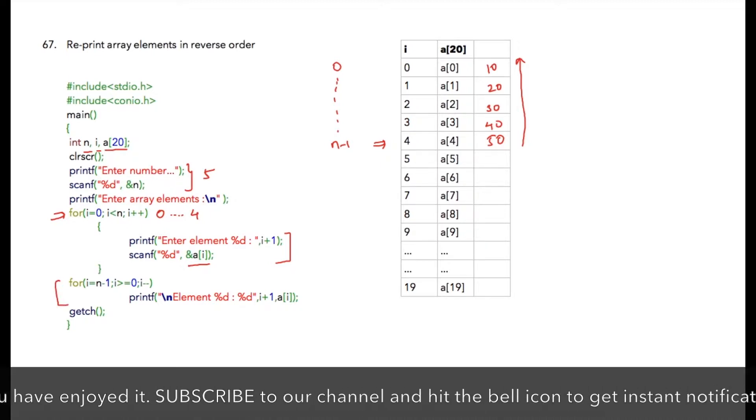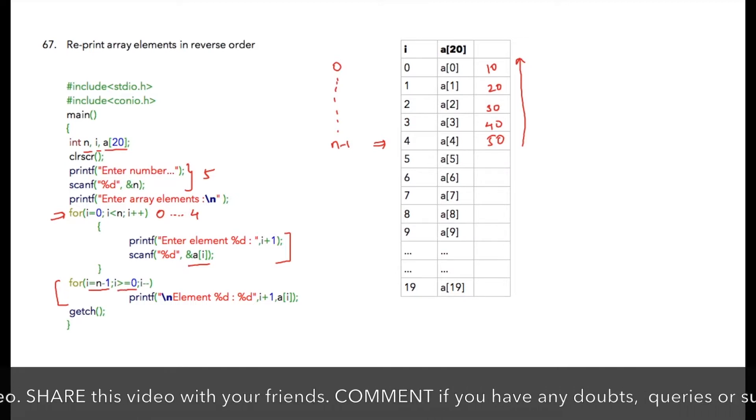This is our second for loop to print array elements in reverse order. I am starting i from n minus one and the condition will be i greater than equal to zero and i will be decremented on each iteration. Inside of printf statement I am using slash n for printing each element on next line.